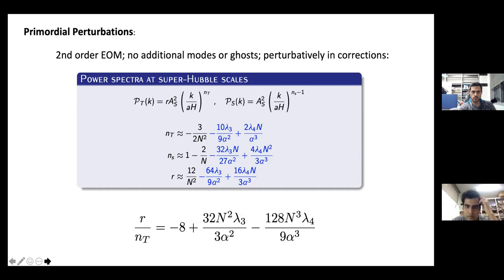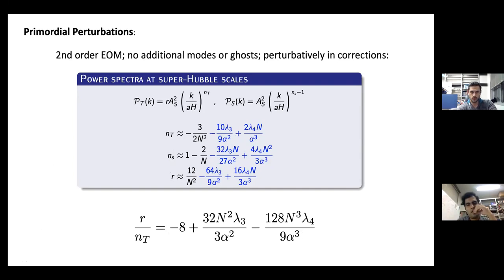Interestingly, if you look at the consistency relation, that relation also deviates from the single scalar field relation. These are qualitatively different purely geometric terms that we are adding, modifying the gravitational dynamics in that early phase of inflation. What you're looking at here are genuine corrections to GR.